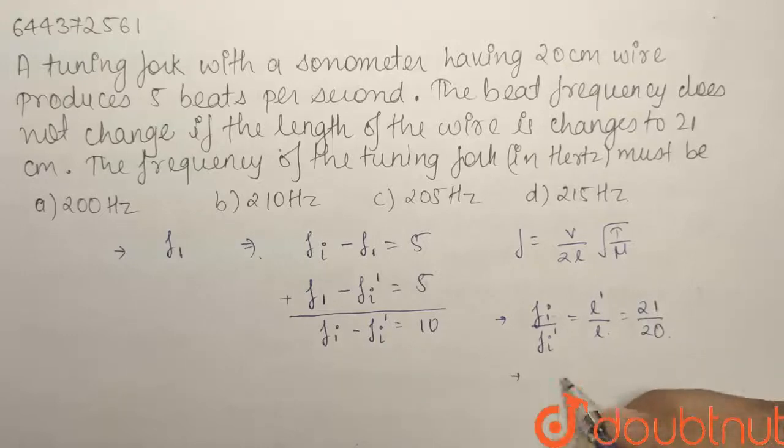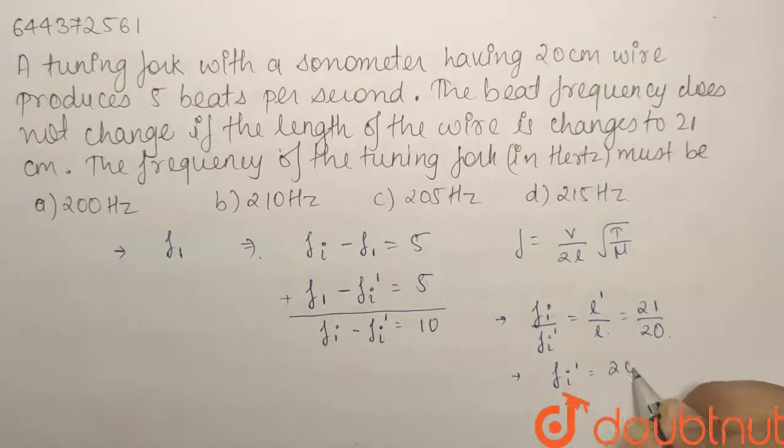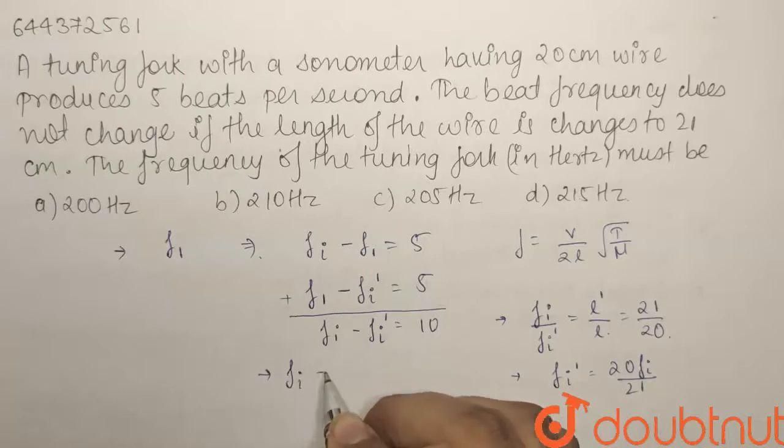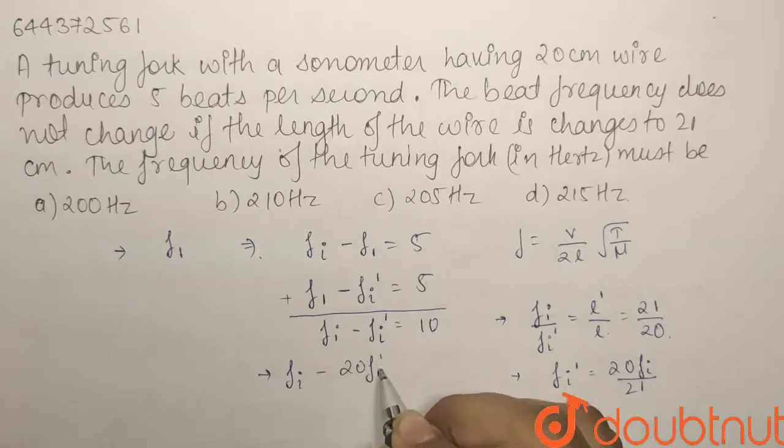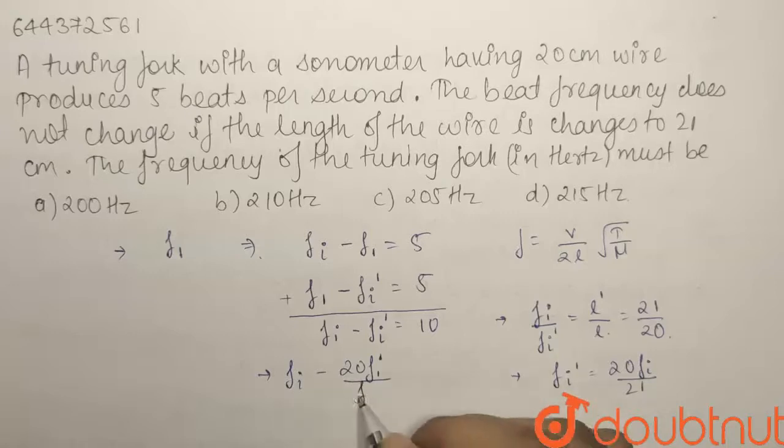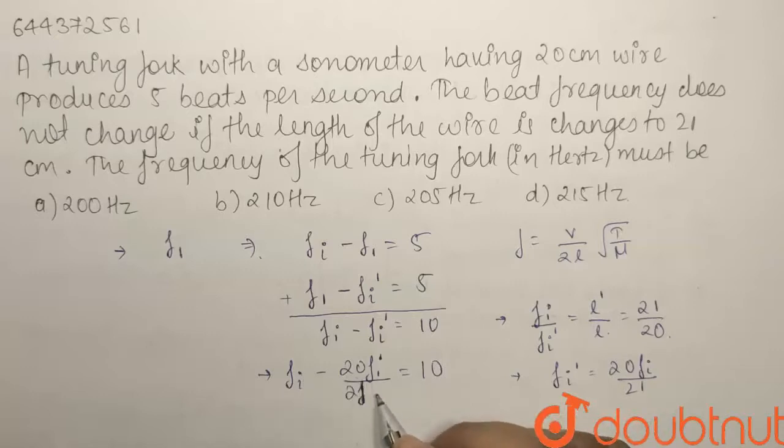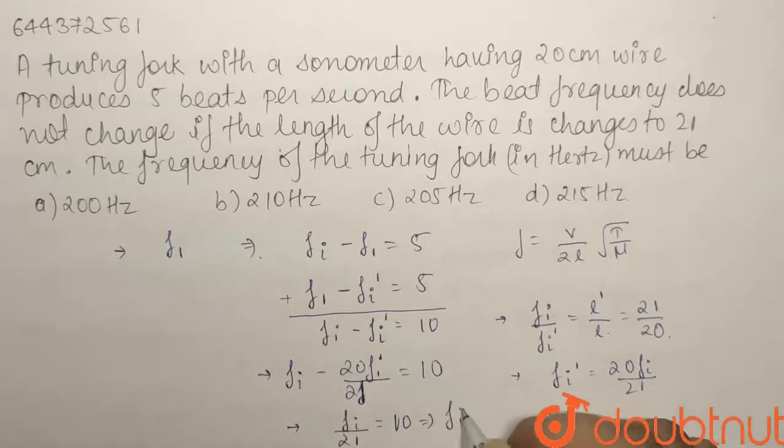We can replace fi dash as 20 fi by 21. If we put this in the equation we get fi minus 20 fi by 21 equals 10. It becomes 21 minus 20 over 21, that is 1, so fi by 21 equals 10. From here fi comes out as 210 hertz.